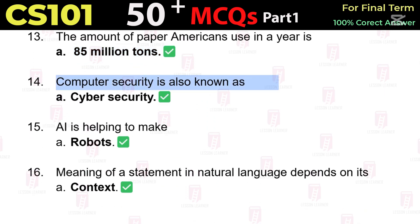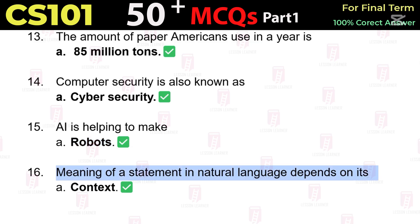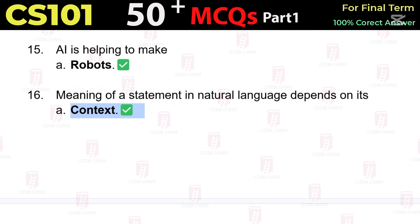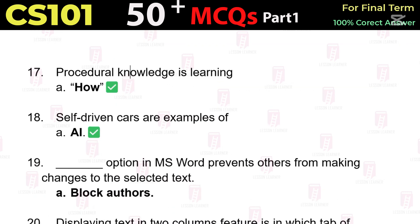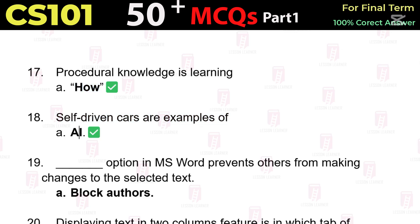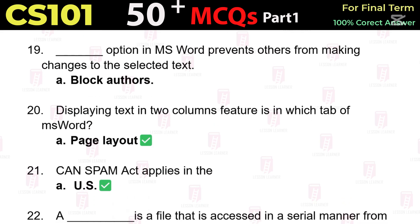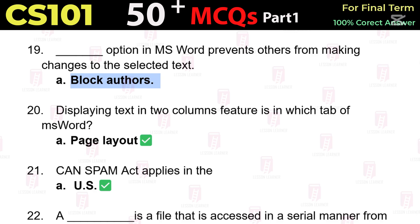Computer security is also known as cyber security. AI is helping to make robots. The meaning of a statement in natural language depends on its context. Procedural knowledge is learning how. Self-driven cars are examples of AI.